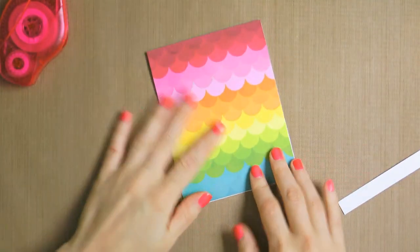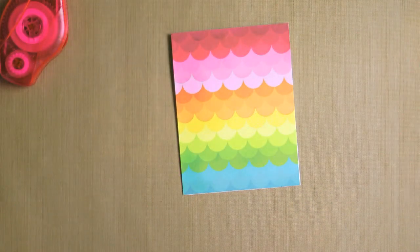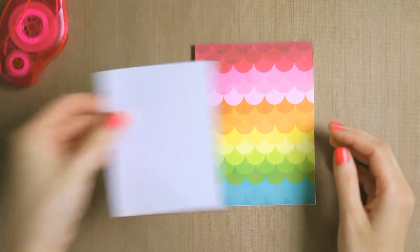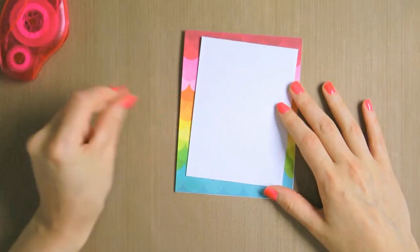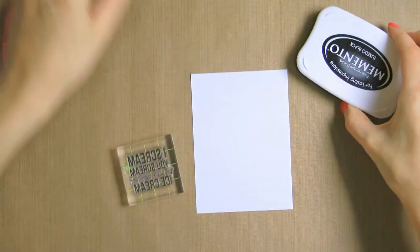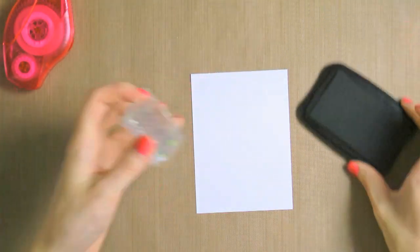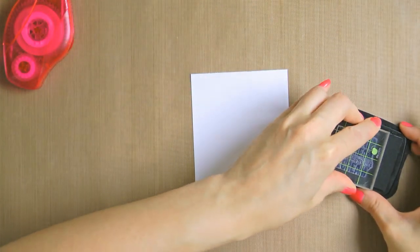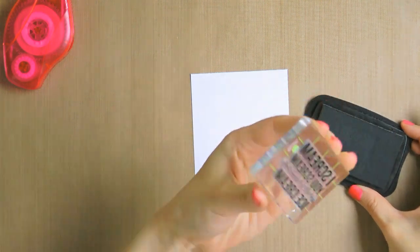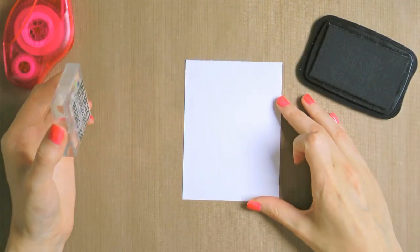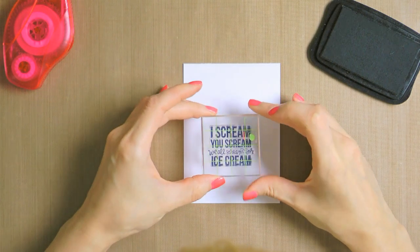I then made a rectangle out of some white cardstock, a quarter of an inch smaller than my card base. And I stamped that ice cream, you scream, we all scream for ice cream sentiment. I'm telling you, I'm loving it, it's such a fun sentiment. So I stamped it using Memento Tuxedo black ink on my card.